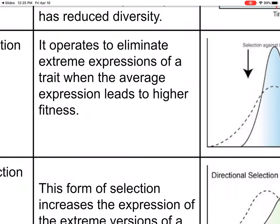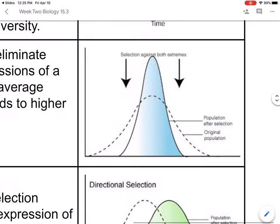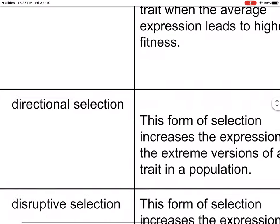Stabilizing selection operates to eliminate extreme expressions of a trait when the average expression leads to higher fitness. So you're not going to have traits that don't help — you're going to have traits that help the species survive and have good fitness. Here's the picture — it's a graph, not too helpful, but you could Google one that's better.